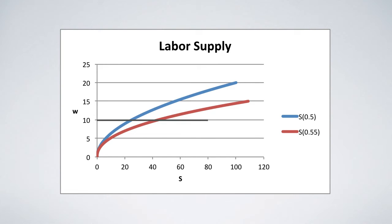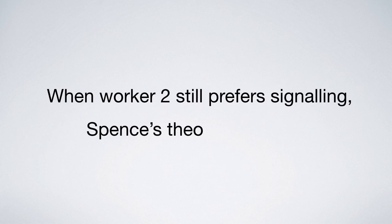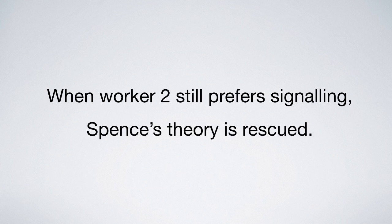If signaling is canceled and wage income is averaged at $10, worker one welcomes it, but not worker two. When worker two still prefers signaling, Spence's theory is rescued.